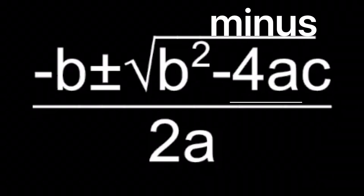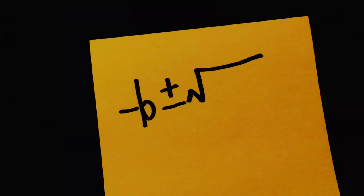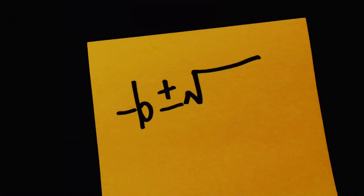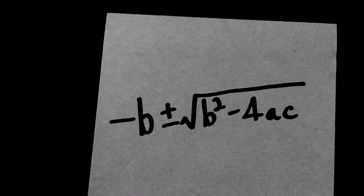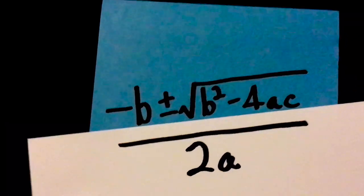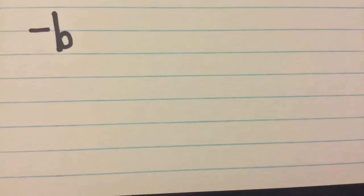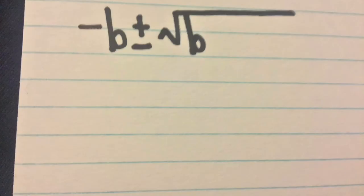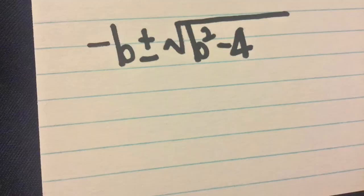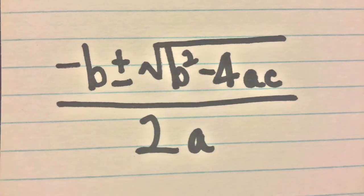...minus 4ac, over 2a. The quadratic formula is negative b, plus or minus the square root of b squared minus 4ac, all over 2a.